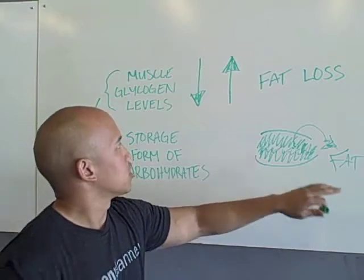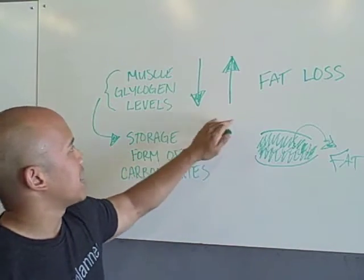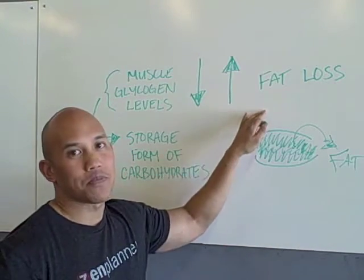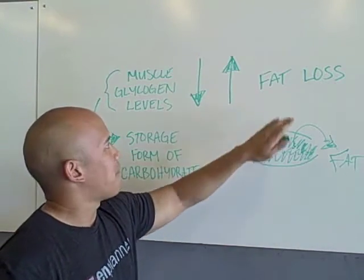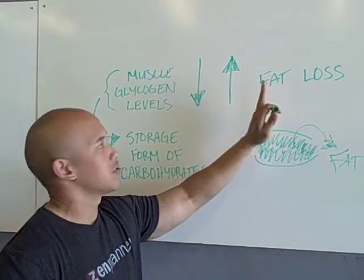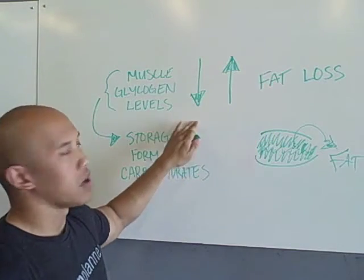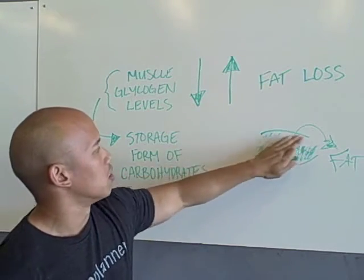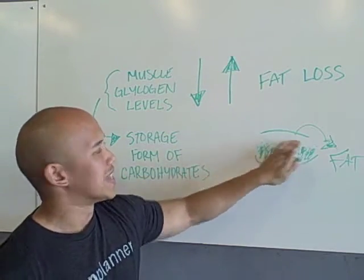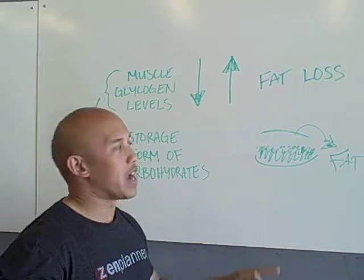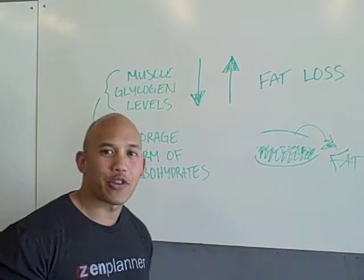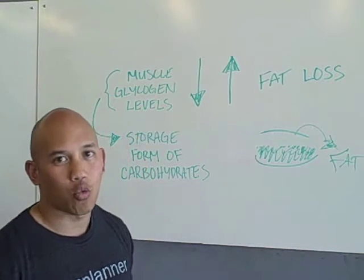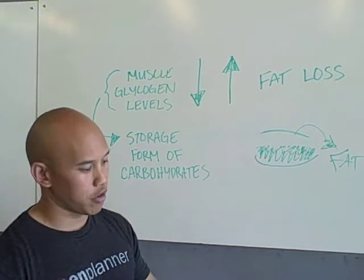...the muscle glycogen basically is going to spill over into your fat stores and be stored as fat. So understand this relationship: fat loss is increased when our muscle glycogen stores are lowered. This is the reason why low-carbohydrate diets work to a degree.